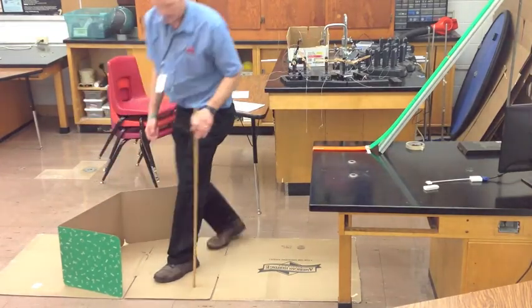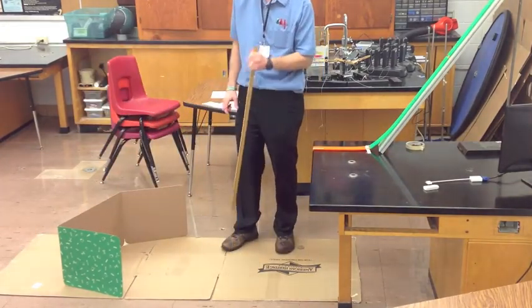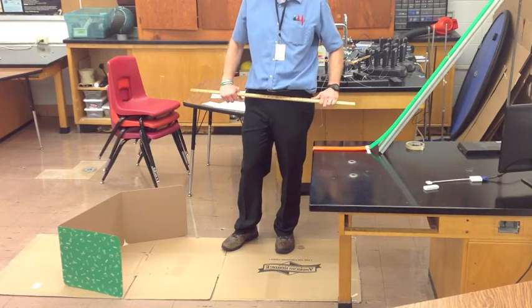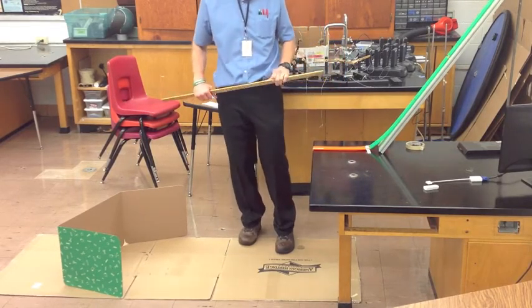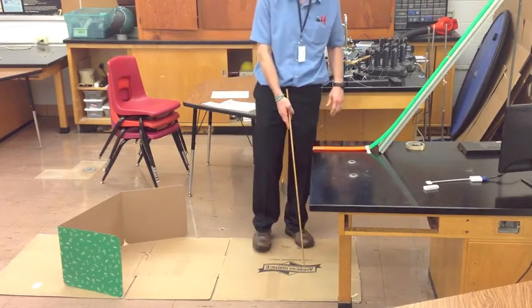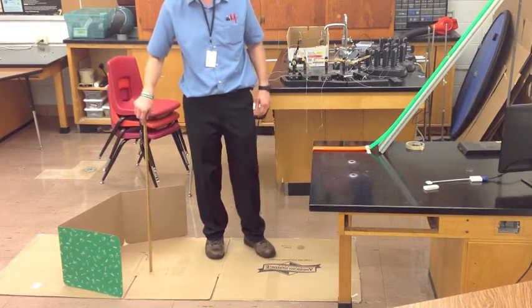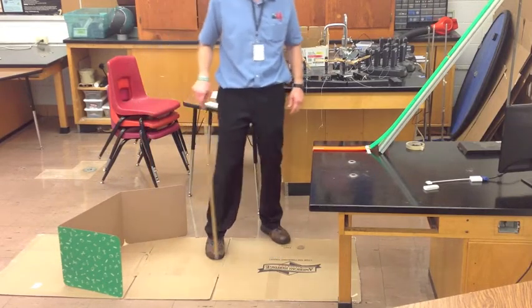Once you find what this horizontal distance is, you're going to add 30 centimeters to it. That's 0.3 meters. Make sure we do everything in meters. So you're going to add 30 centimeters to this distance, and that's your new goal.